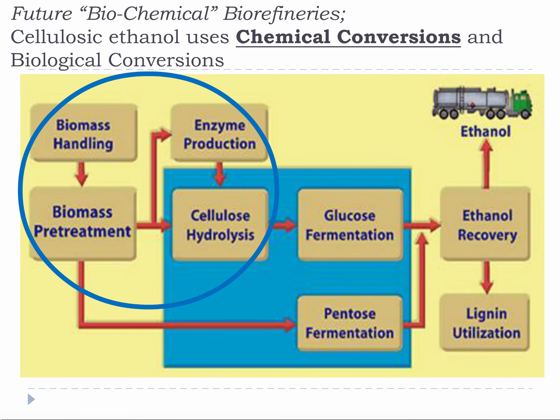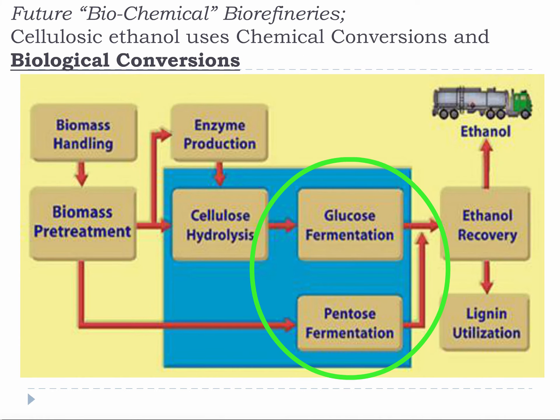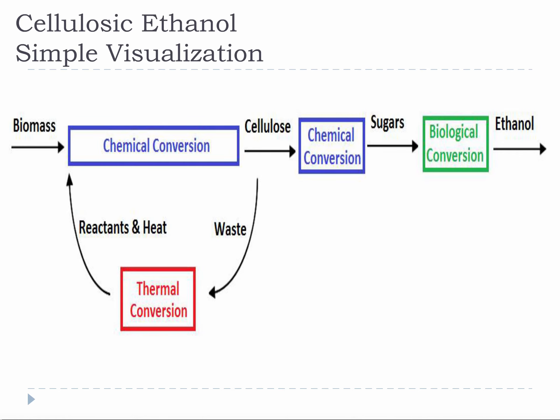This diagram shows the approximate traditional cellulosic ethanol process. Cellulosic ethanol integrates chemical conversions, roughly shown inside the blue circle, with biological conversions shown inside the green circle. When we take away the process diagram and think about what we have learned about the conversions, it looks like this. This simplification is interesting because it makes you realize how complicated cellulosic ethanol can be and how integrated it really is.